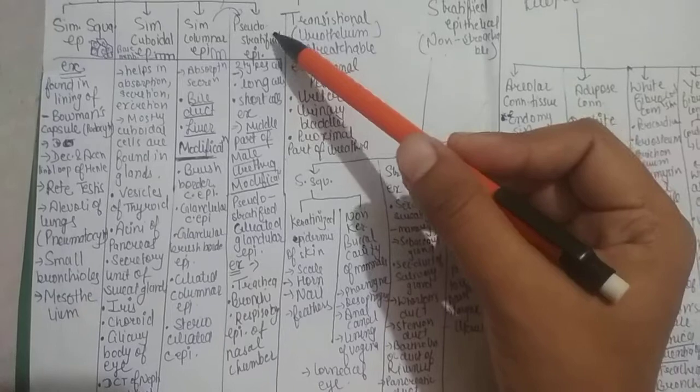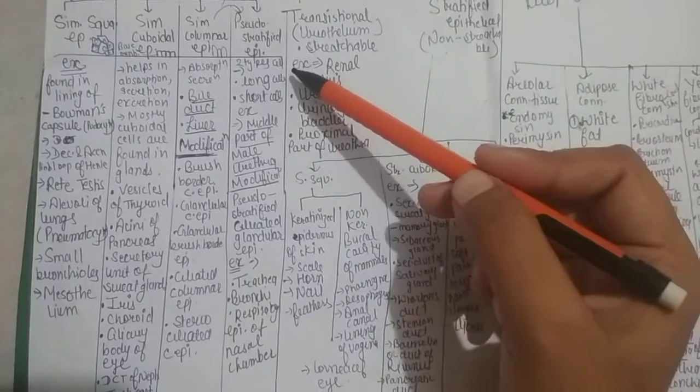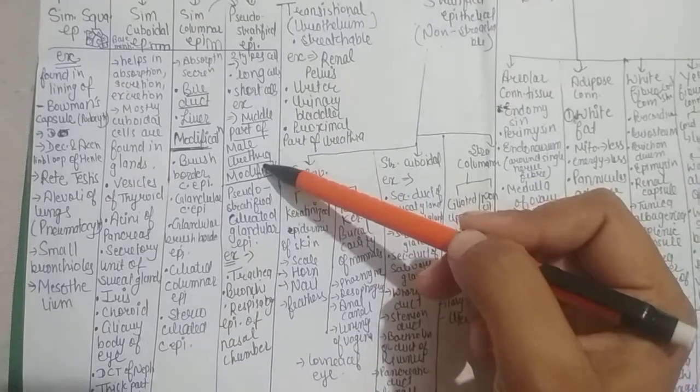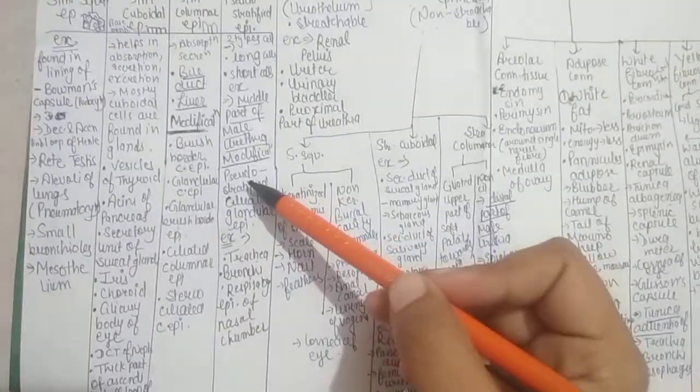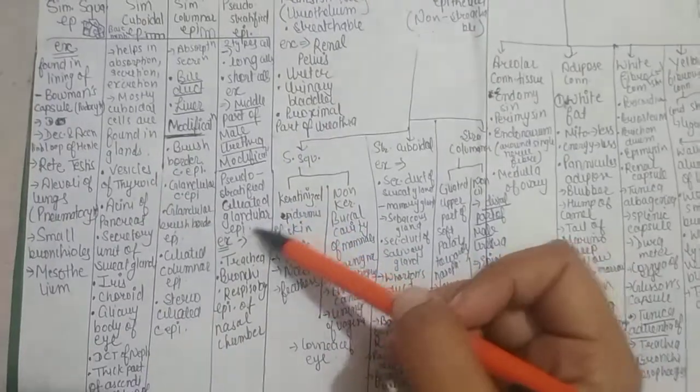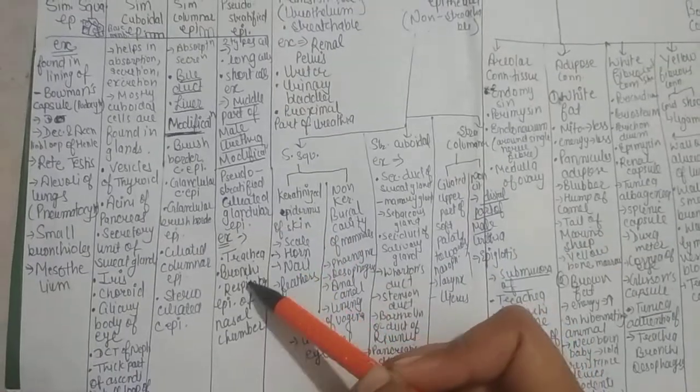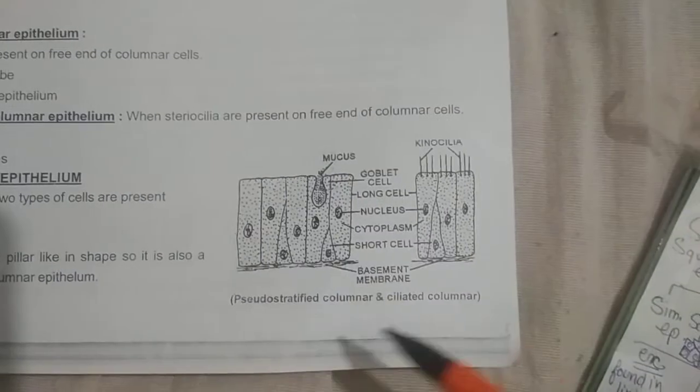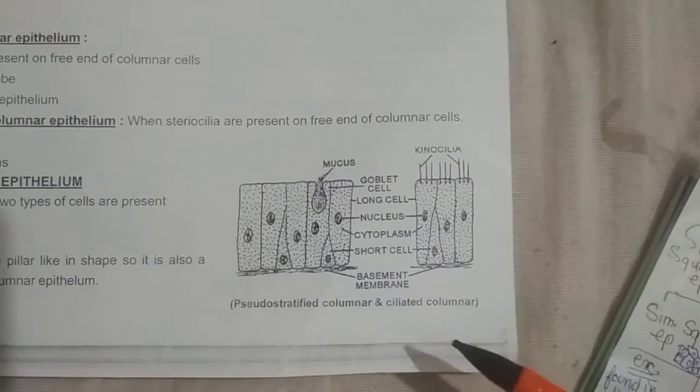Then pseudostratified epithelium has two types of cells: long cells and short cells. Example: middle part of male urethra. Its modification is pseudostratified ciliated glandular epithelium. Examples: trachea, bronchi, respiratory epithelium of nasal chamber. Diagram of pseudostratified ciliated columnar.